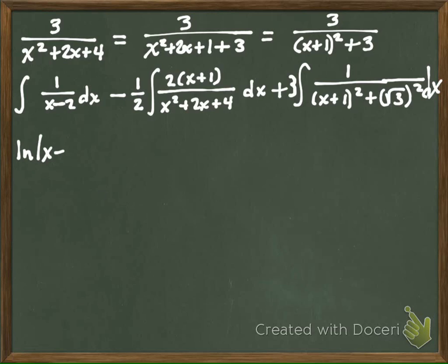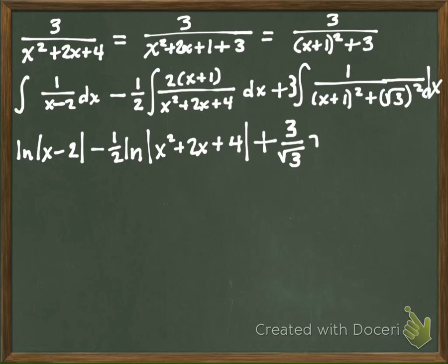What's the first term integrate to? This is ln of x minus 2. What about the second one? It's du over u. So it's still ln. So this is 1 half ln of x squared plus 2x plus 4. And what's our last term integrate to? You can look in the front cover of your textbook at arc tangent if you need to. 3 over square root of 3. Because normally it would be 1 over a, but we had a 3 out front. And we didn't have limits, so we have to say plus a constant.